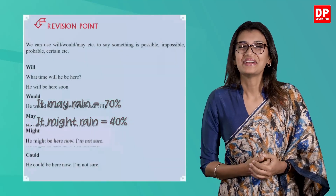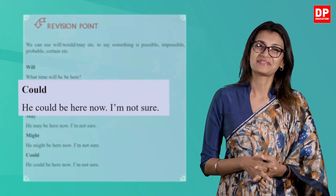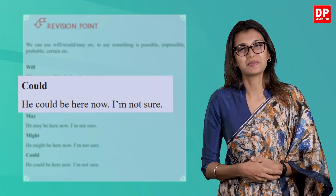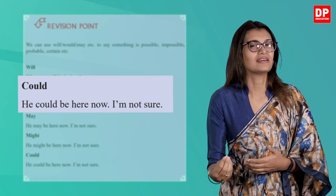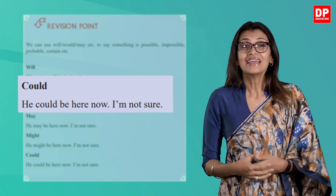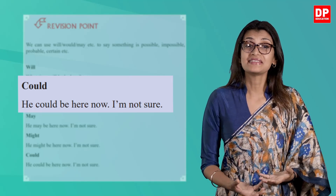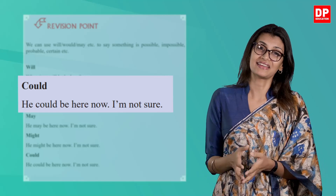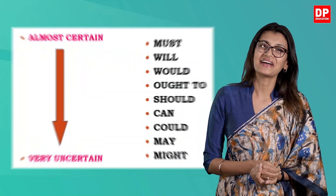And finally, we have 'could.' He could be here now — I'm not sure. It expresses a possibility of him being there, but this is less likely. In order to get an idea of where these verbs fit in the spectrum of certainty, let's look at this diagram. As you can see, the different levels of certainty are presented.